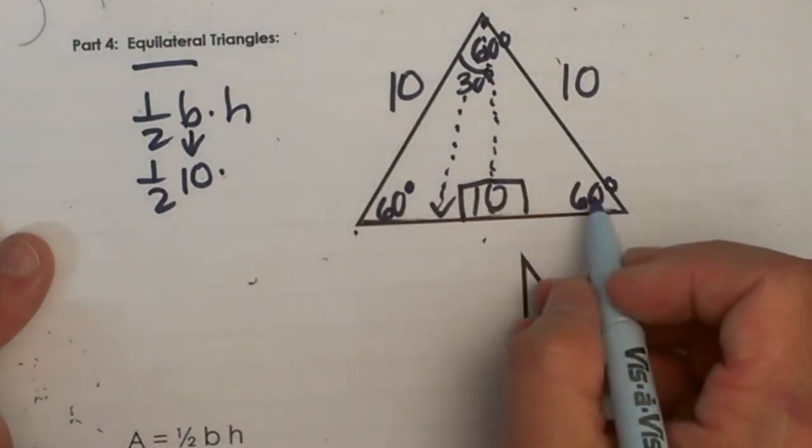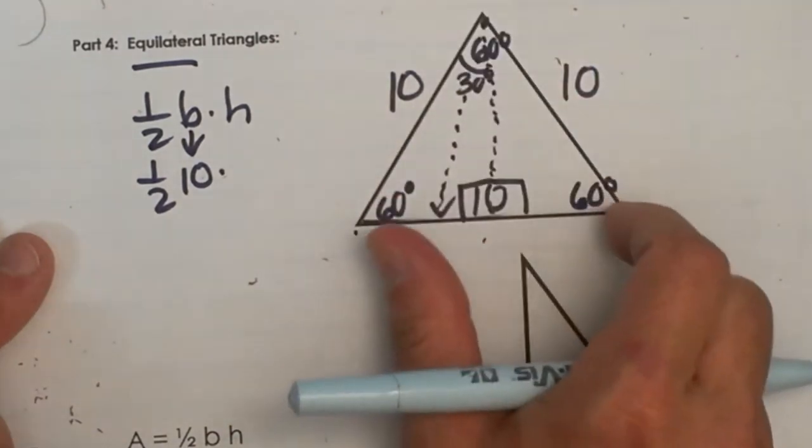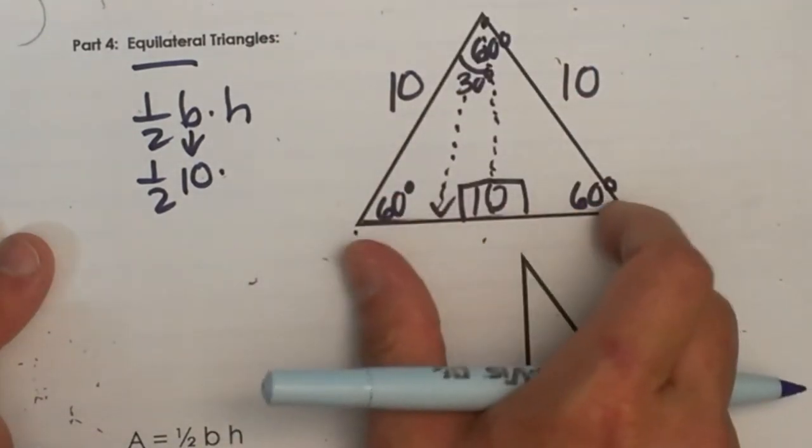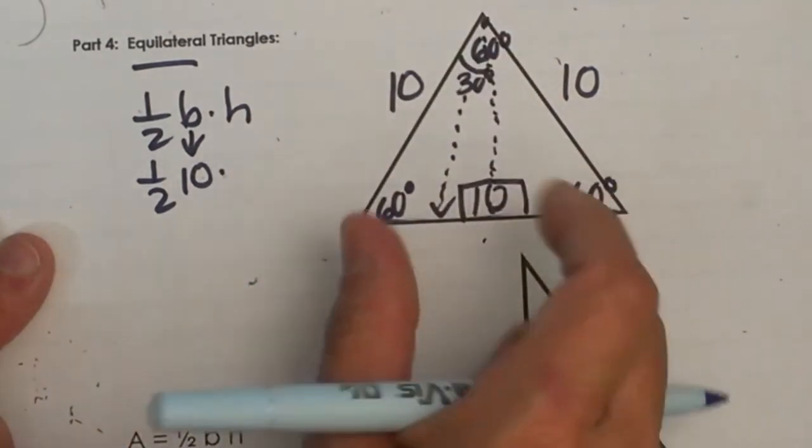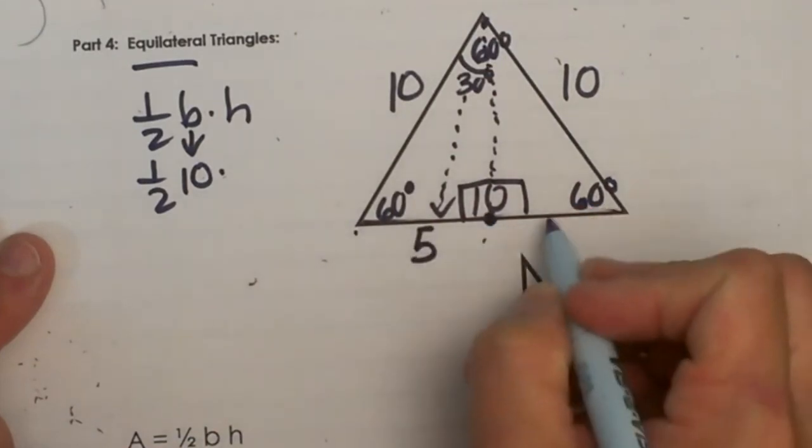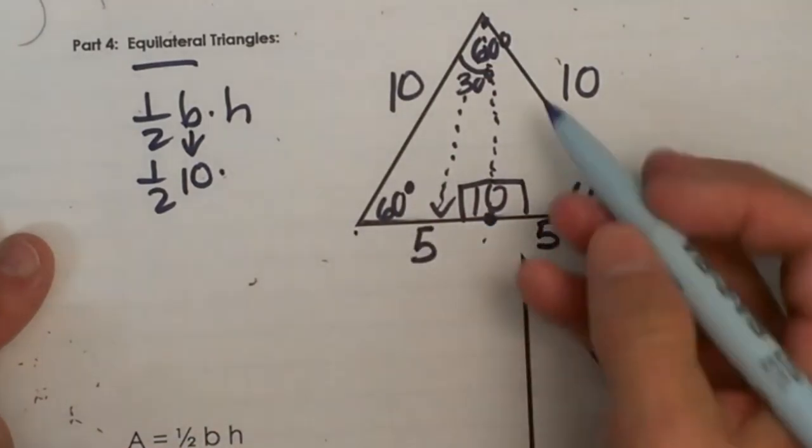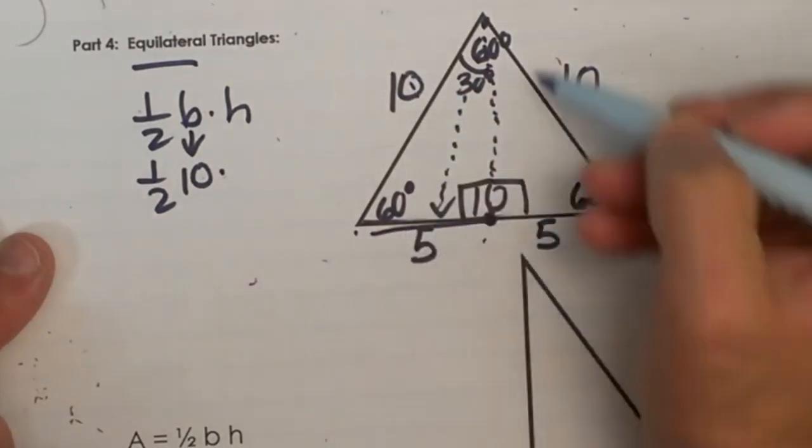We know a couple pieces of information. We know the hypotenuse of the 30, 60, 90, or you can say this side is 10. If I draw the altitude in, what does it do to that side of 10? It cuts it in half. So that means this side is 5 and this side is 5. And lo and behold, yes that is half of the hypotenuse. So the short leg is 5.